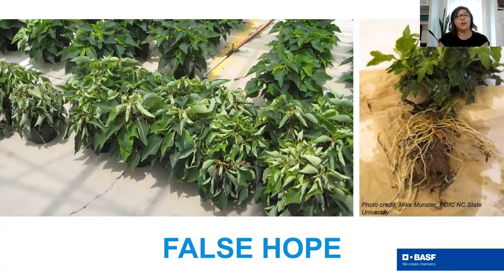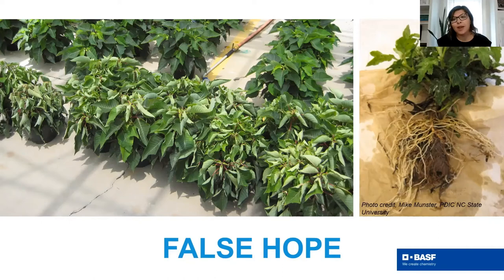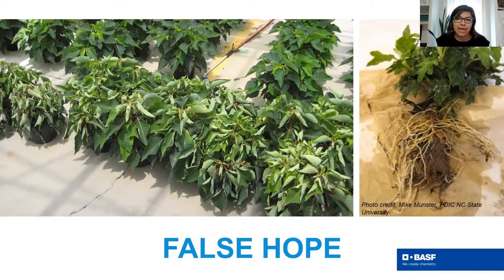Some diseases cause very severe damage if you miss the preventative window, and the damage persists all season long. For example, Blumeriella leaf spot on cherry trees causes a shot hole symptom — you cannot reverse the damage if you miss the treatment window in spring. There's a point where plants will not recover and no amount of fungicide will save you, particularly for root and crown diseases like Pythium and Phytophthora, and also for Botrytis blight that has made its way into the crown. These are examples of what I call false hope.